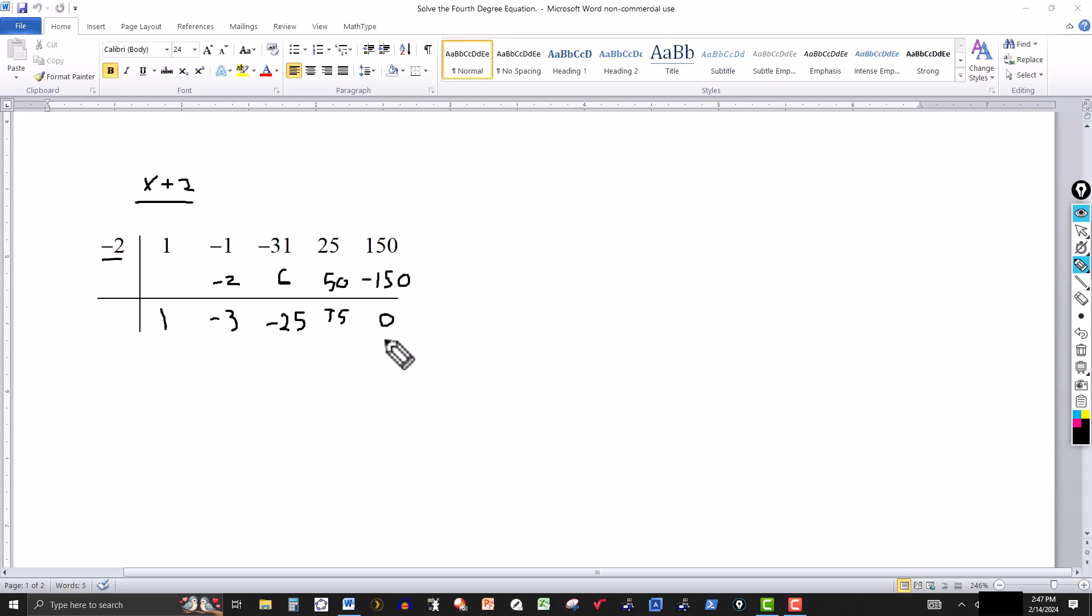Now sometimes these zeros or solutions are going to be repeated. So what you would do is try it again, repeat the procedure. If you get another 0, then negative 2 would be a zero of multiplicity 2. But it's not in this case. So let's go to another zero here.